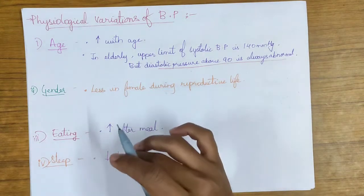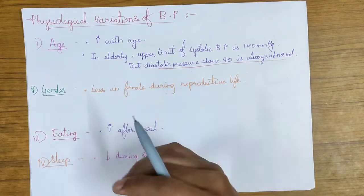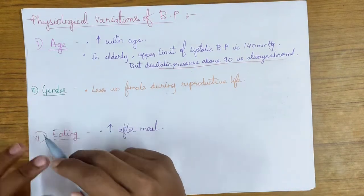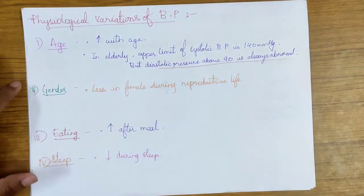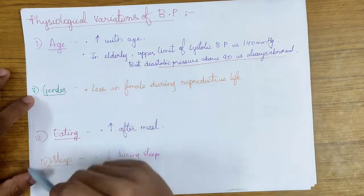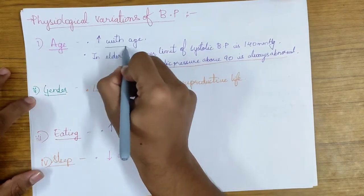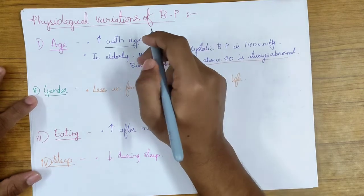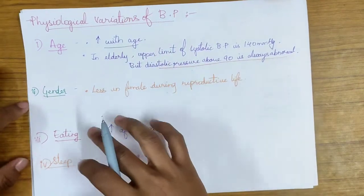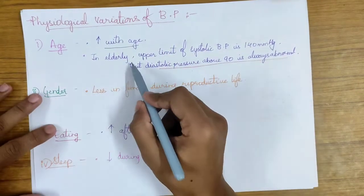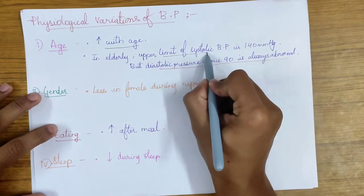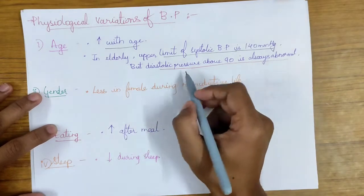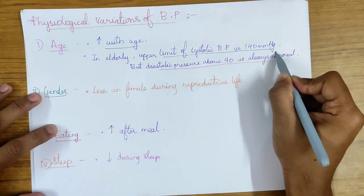The next topic is physiological variations of blood pressure. Blood pressure varies due to many physiological factors — pathological or abnormal variations are not discussed here. The first factor is age: with increasing age, blood pressure also increases. In elderly patients, the upper limit of systolic blood pressure is 140 mmHg. However, diastolic pressure above 90 is always abnormal regardless of age.